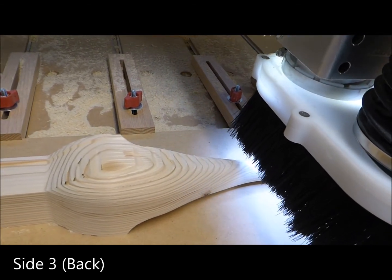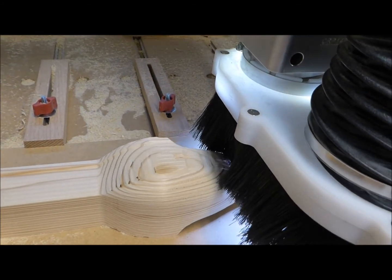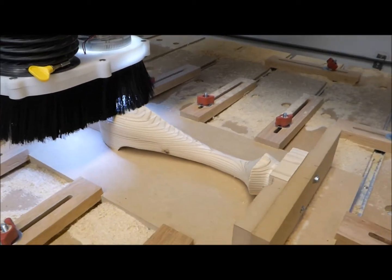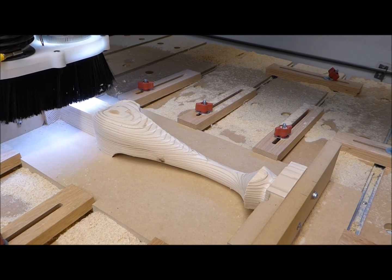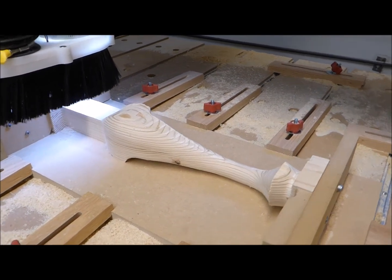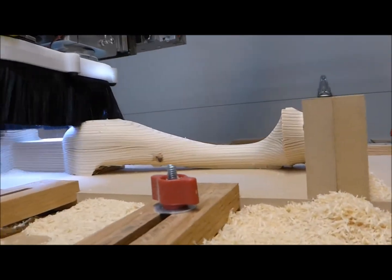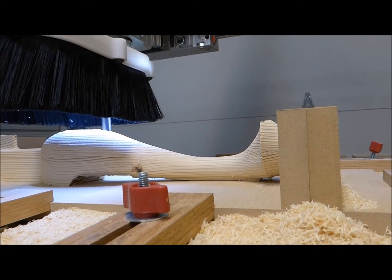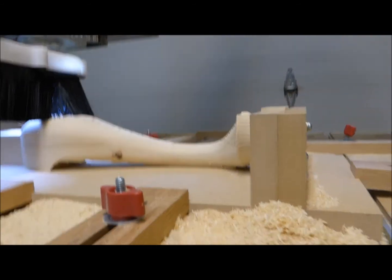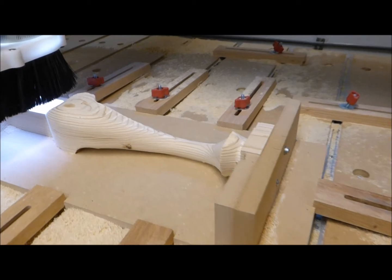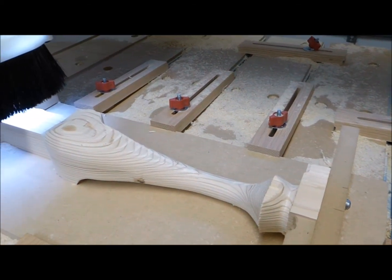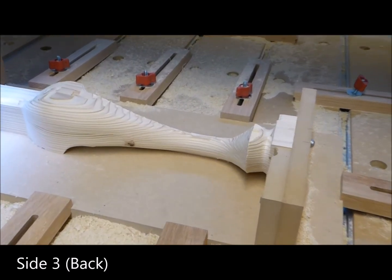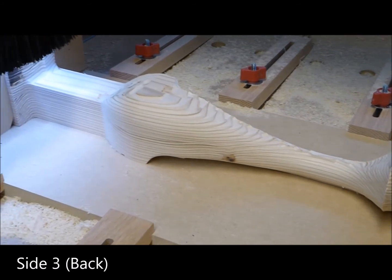This is the parallel cutting of the third side, which is the back side. Only the first two sides require a roughing pass followed by a finishing pass. Sides three and four use only finishing passes. This is the third or back side after the final toolpath.